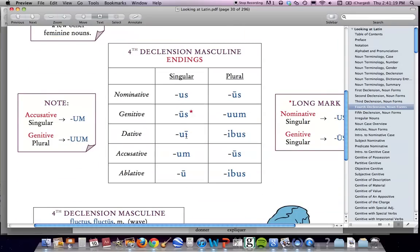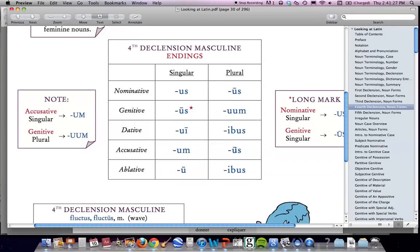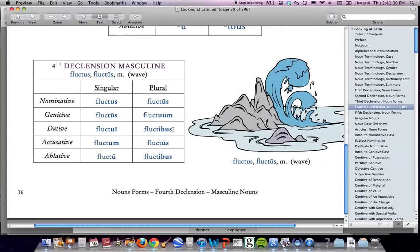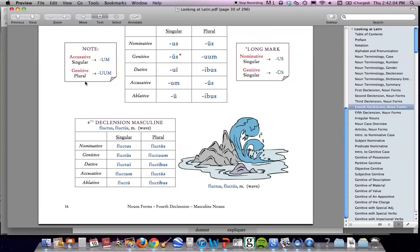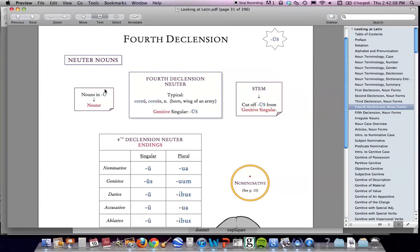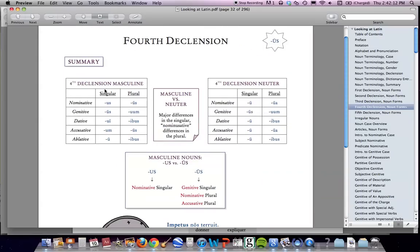Look at the endings. Funny set of endings. Us, us, ui, um, um, us, u, um, ebus, us, ebus. These are the endings of the fourth declension. Look at the endings right here with fluctus. Fluctus, fluctus, fluctui, fluctum, fluctu, fluctus, fluctuum, fluctibus, fluctus, fluctibus. Repeat them after me. Fluctus, fluctus, fluctui, fluctum, fluctu, plural. Fluctus, fluctuum, fluctibus, fluctus, fluctibus. These are the endings of this fourth declension. Not much to say about this. Memorize these and you'll be just fine.